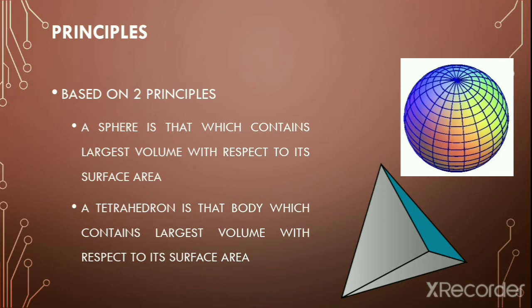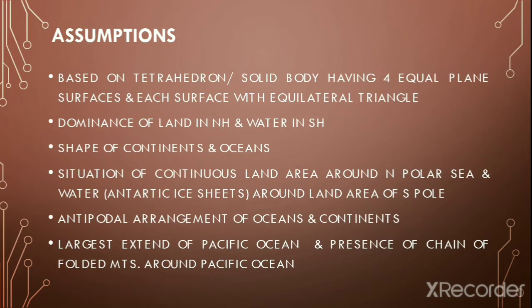The theory is based on two assumptions or principles. Principle number one is that a sphere is that which contains the largest volume with respect to its surface area. The second one is that a tetrahedron is that body which contains the smallest volume with respect to its surface area. A tetrahedron is a solid body having four equal plane surfaces, and each surface is an equilateral triangle.